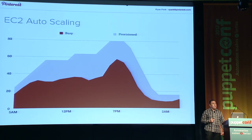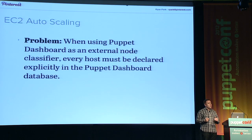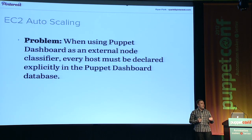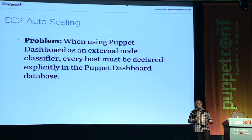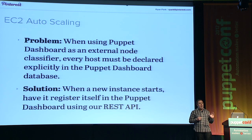Since we're paying for EC2 servers by the hour, we've tied our cost structure much more directly to the amount of traffic we're actually supporting. One issue is that Puppet Dashboard, when used as the external node classifier, needs to know about each server in advance in order to know what to install on it. Normally, you'd go into Puppet Dashboard's web interface and add the server manually. But that doesn't work well when you're launching dozens of new instances automatically every day, especially in the middle of the night. So we created another endpoint for our API that, when a new server comes up, gets a host name for it and informs Puppet Dashboard to expect this new server.